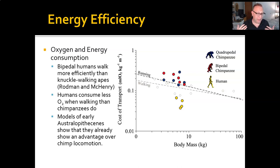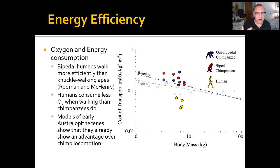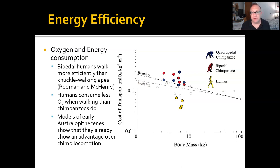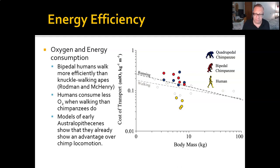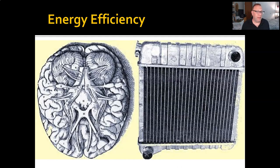Chimps consume roughly the same oxygen whether walking bipedally or quadrupedally, but we consume much less when walking. There's actually some fossil evidence from the australopithecines showing that even they — these incomplete bipeds — already had some of these energy efficiencies. This is really important because one big factor in evolution and reproductive fitness is how much energy you spend to do a thing versus how much energy you bring in, and this can have a major impact as a selective feature.